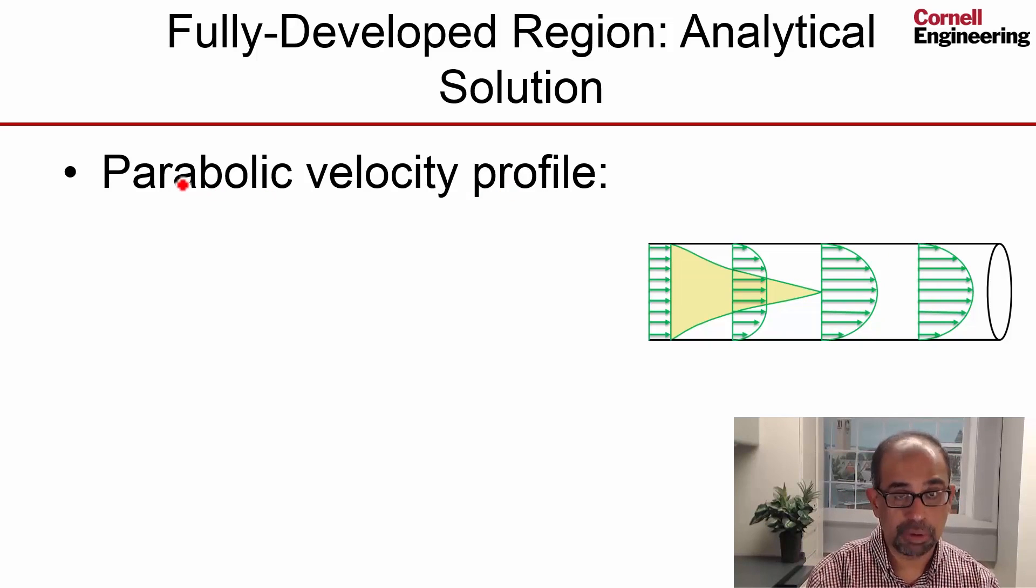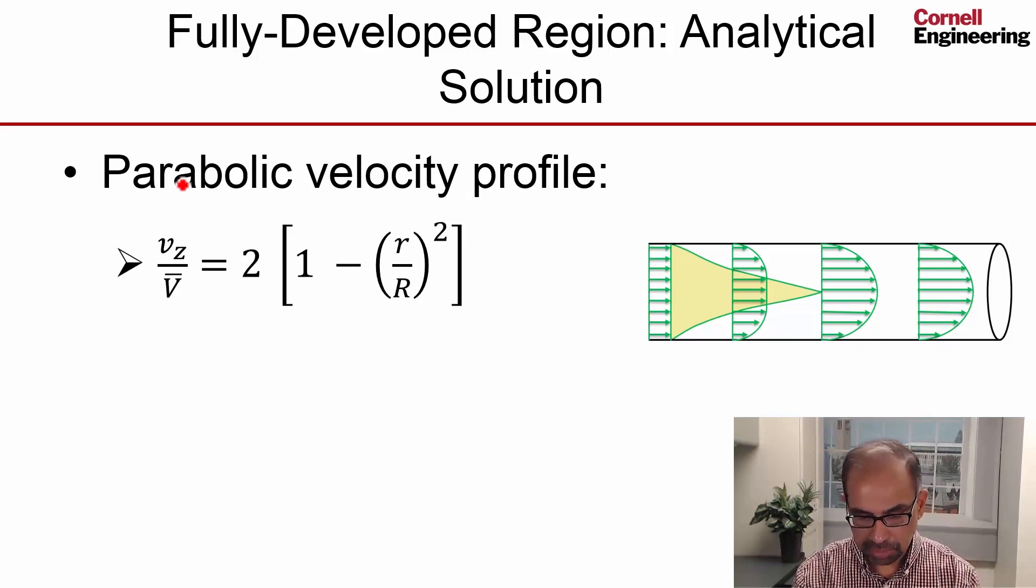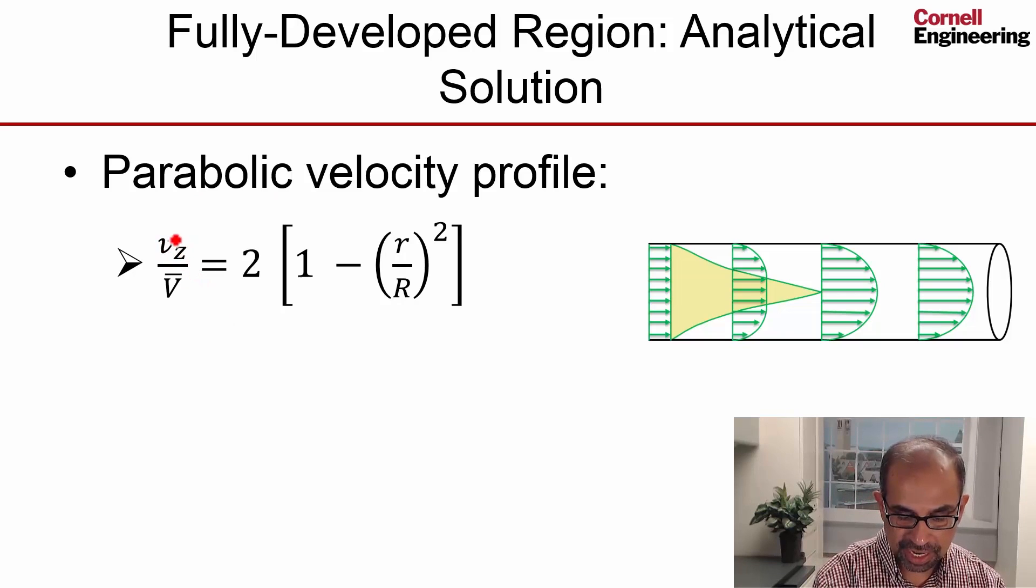The velocity profile comes out to be parabolic and can be written in this form. On the left hand side, I have the axial velocity normalized by the average velocity. On the right hand side, it's proportional to r squared—that's where you get the parabolic form.